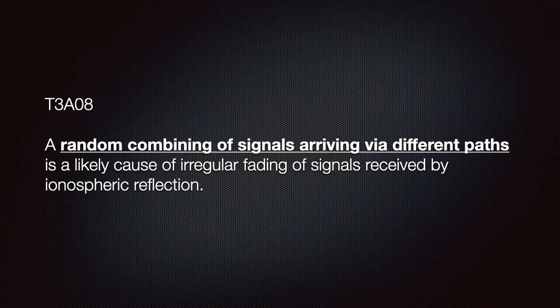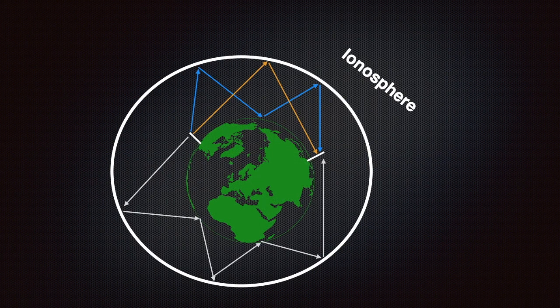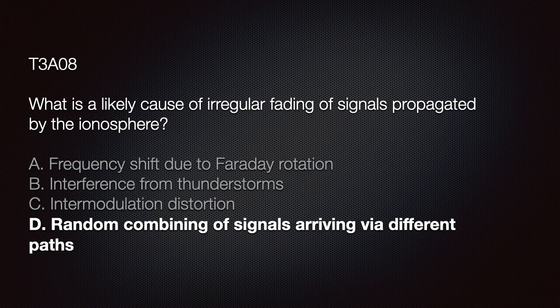We need to know that a random combination of signals arriving via different paths is likely to cause irregular fading of signals received by ionospheric reflection. This slide illustrates how signals could arrive at a distant station via different paths, and as discussed, multi-path propagation can cancel or reinforce the signal. The exam question asks for the likely cause of irregular fading of signals propagated by the ionosphere. The correct answer is D: random combination of signals arriving via different paths.